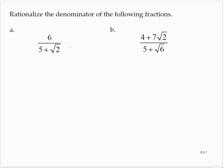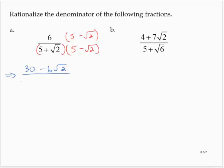The conjugate just changes the sign in the denominator. So I'm going to take 5 plus the square root of 2 and multiply it by 5 minus the square root of 2, and do the same thing in the numerator. That gives me 30 minus 6 times the square root of 2 in the numerator. In the denominator, I have 25 minus 5 times the square root of 2 plus 5 times the square root of 2, and then minus the square root of 4.